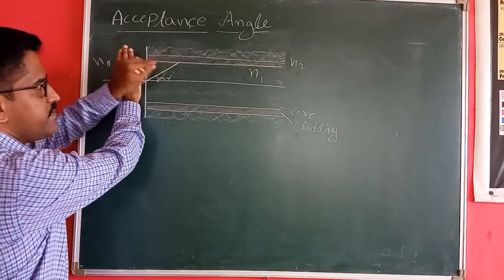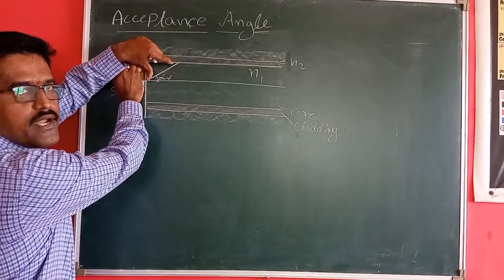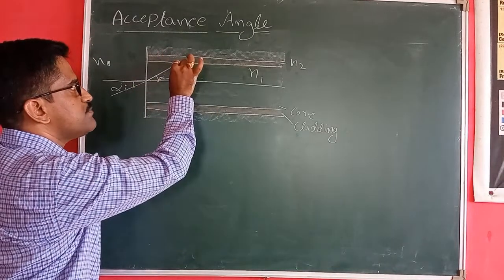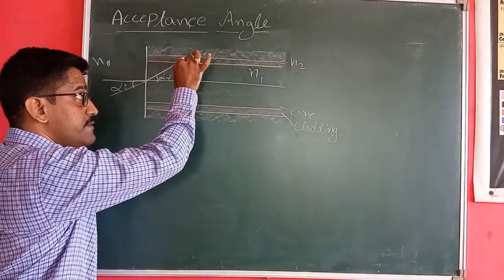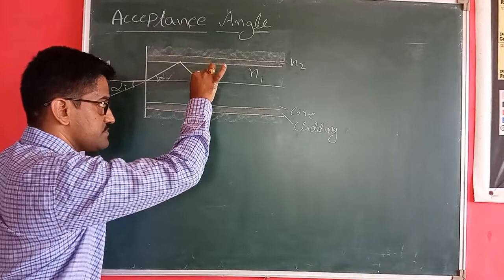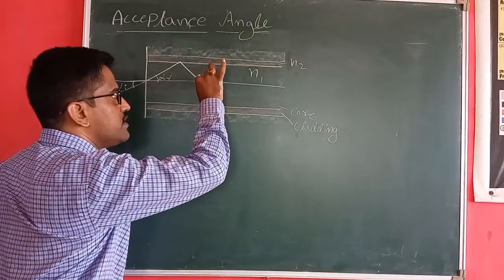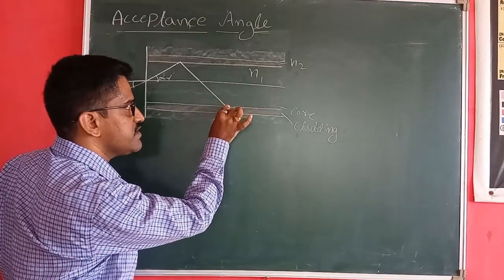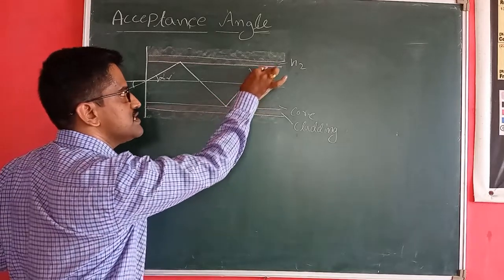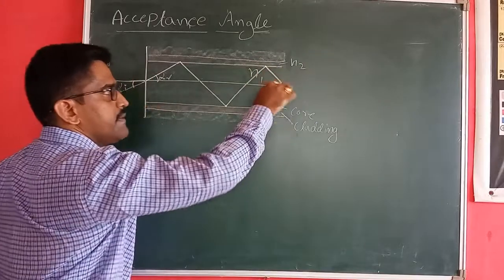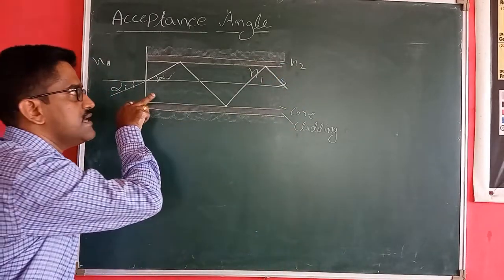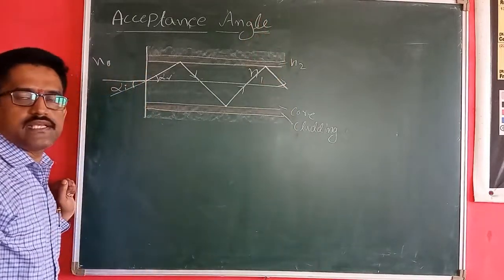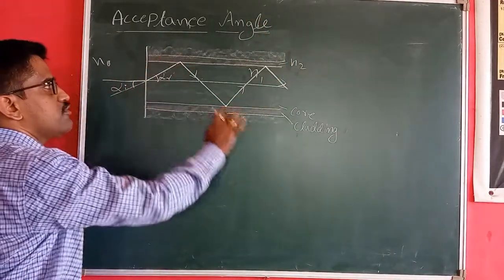When this enters into the optical fiber it acts as the incident ray. When this passes from the denser medium — meaning from core to cladding — at this boundary of cladding, total internal reflection takes place. Again, as this ray passes from core to cladding at another point, total internal reflection takes place again. It moves in this direction and the light ray propagates through the core, escaping from this optical fiber at the end. This is the propagation of the light ray.